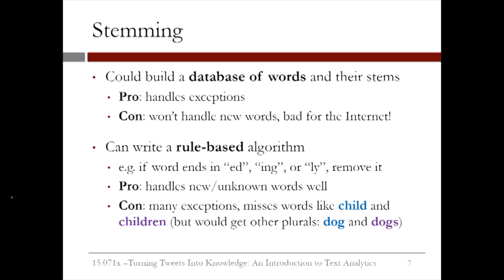A different approach is to write a rule-based algorithm. In this approach, if a word ends in things like 'ed,' 'ing,' or 'ly,' we would remove the ending. A pro of this approach is that it handles new or unknown words well. However, there are many exceptions, and this approach would miss all of these. Words like 'child' and 'children' would be considered different, but it would get other plurals like 'dog' and 'dogs.'